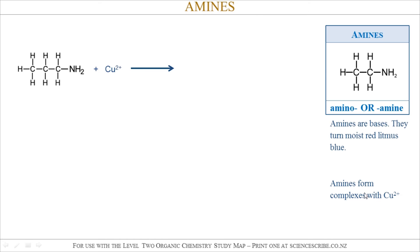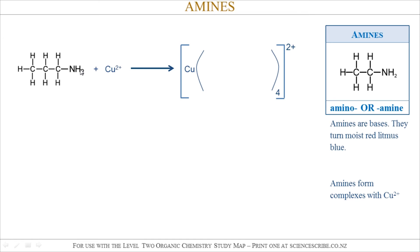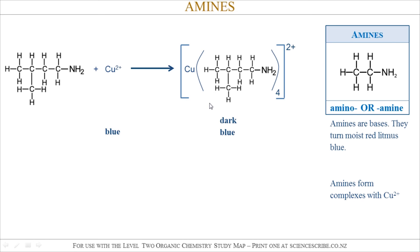Amines also form complex ions with copper 2+. If I take any amine and react it with copper 2+, the first thing I write is a big square bracket to signify it's a complex ion. I need 2+ at the top right-hand corner and a little 4 with a curly bracket. All you're going to do is take the amine you started with and literally copy it into the curly bracket — it doesn't matter which amine it is.